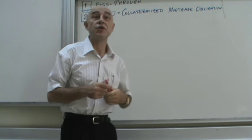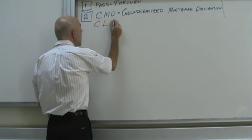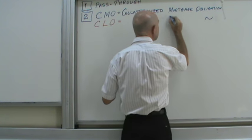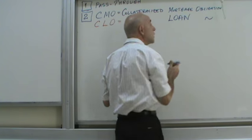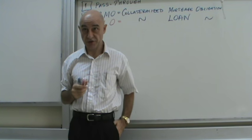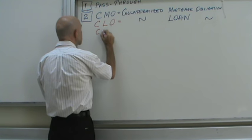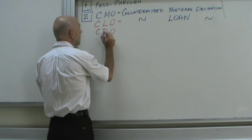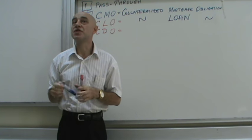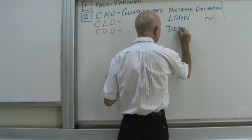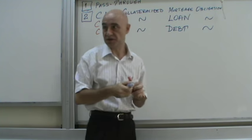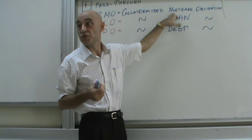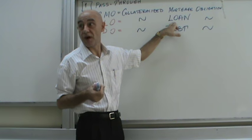There's also CLO, standing for collateralized loan obligations, and CDO, standing for collateralized debt obligations. These are the same type of financial instruments, each backed by different assets: the first by mortgages, and the second and third are tricky.